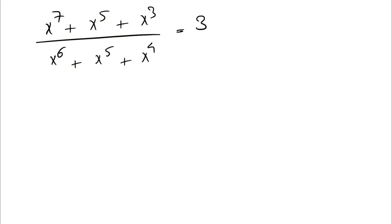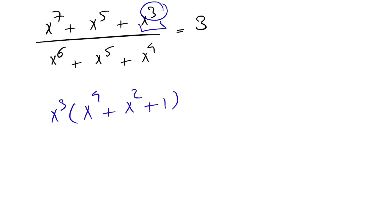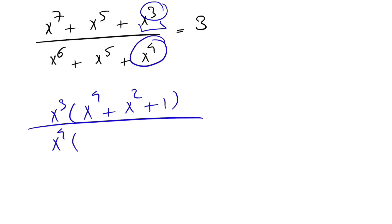The normal approach for these kinds of questions is to factor the lowest exponent from both the numerator and denominator. From the numerator we factor x to the 3, giving us x to the 4 plus x squared plus 1, and from the denominator we factor x to the 4, giving us x squared plus x plus 1 equals 3.